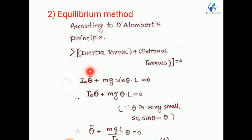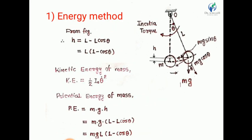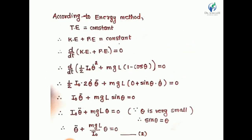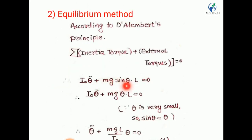The inertia torque is IO·θ̈. The external torque due to gravity has a component mg·sinθ acting at length L, so the external torque is mg·sinθ·L. Therefore: IO·θ̈ + mg·sinθ·L = 0. Since θ is very small, we replace sinθ with θ, giving: θ̈ + (mgL/IO)·θ = 0.